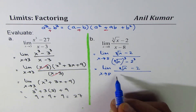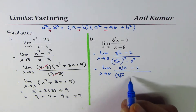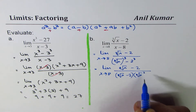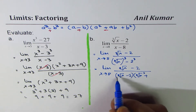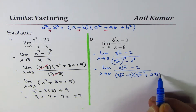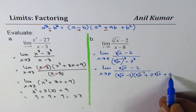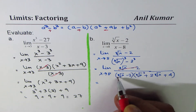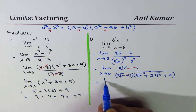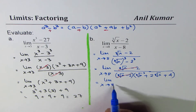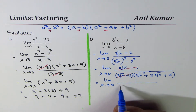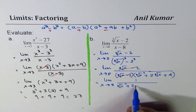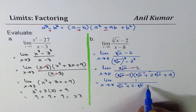Limit as x approaches 8, we have (cube root of x minus 2) divided by a cube minus b cube, where a is cube root of x. We write this as (cube root of x minus 2) times (cube root of x squared plus 2 times cube root of x plus 4). The numerator gets cancelled out with the factor in the denominator. So we write this as: limit as x approaches 8 of 1 over (cube root of x squared plus 2 times cube root of x plus 4).